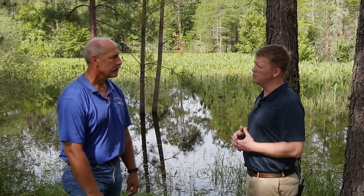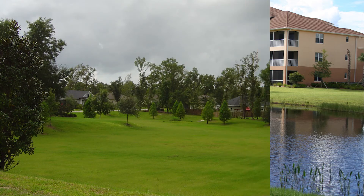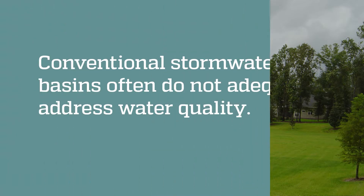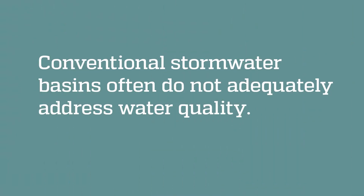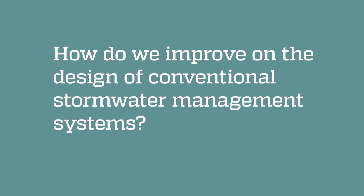But some of our most common solutions, like stormwater ponds — the wet ponds and dry infiltration basins — may not be removing the pollutants or being as good for water quality as we could be doing. Are there other options for how we could be developing better?